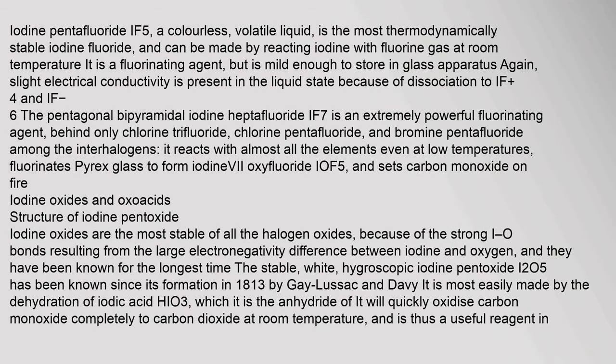Iodine pentafluoride (IF₅), a colorless volatile liquid, is the most thermodynamically stable iodine fluoride and can be made by reacting iodine with fluorine gas at room temperature. It is a fluorinating agent but is mild enough to store in glass apparatus. The pentagonal bipyramidal iodine heptafluoride (IF₇) is an extremely powerful fluorinating agent — behind only chlorine trifluoride, chlorine pentafluoride, and bromine pentafluoride among the interhalogens. It reacts with almost all elements even at low temperatures, fluorinates Pyrex glass to form iodine(V) oxyfluoride (IOF₅), and sets carbon monoxide on fire.